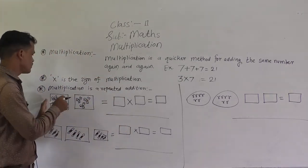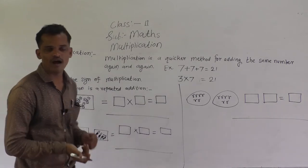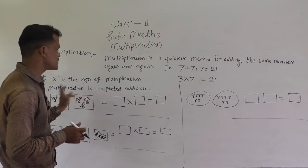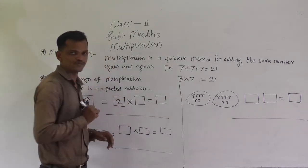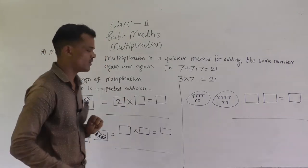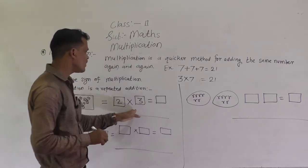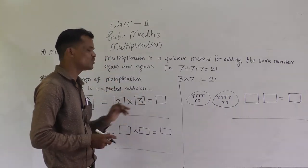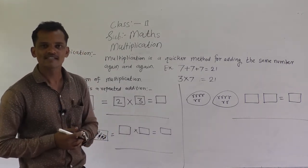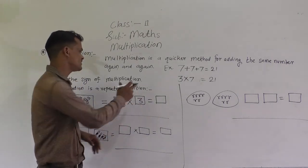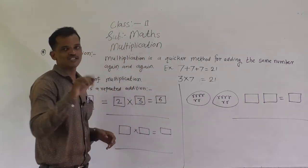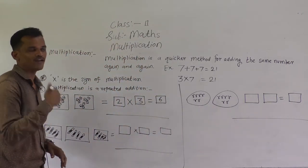By using multiplication, we can count how many flowers there are. There are 2 groups of flowers, and in each group there are 3 flowers. So here we get the multiplication fact: 2 into 3. Recite the table of 2 up to 3 — 2 threes are 6. Otherwise, you can recite the table of 3 up to 2 — 3 twos are 6. So there are 6 total flowers. You can count and confirm: 1, 2, 3, 4, 5, 6.